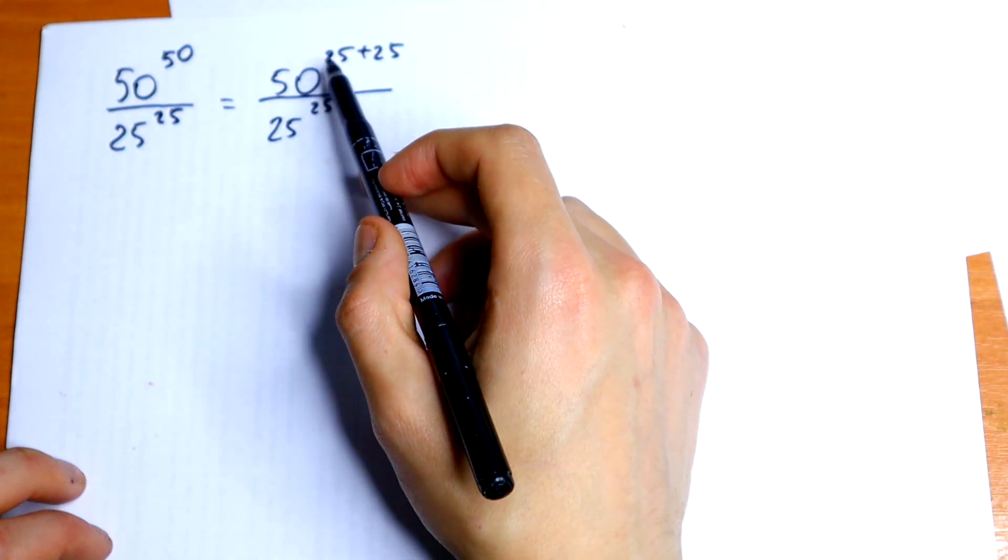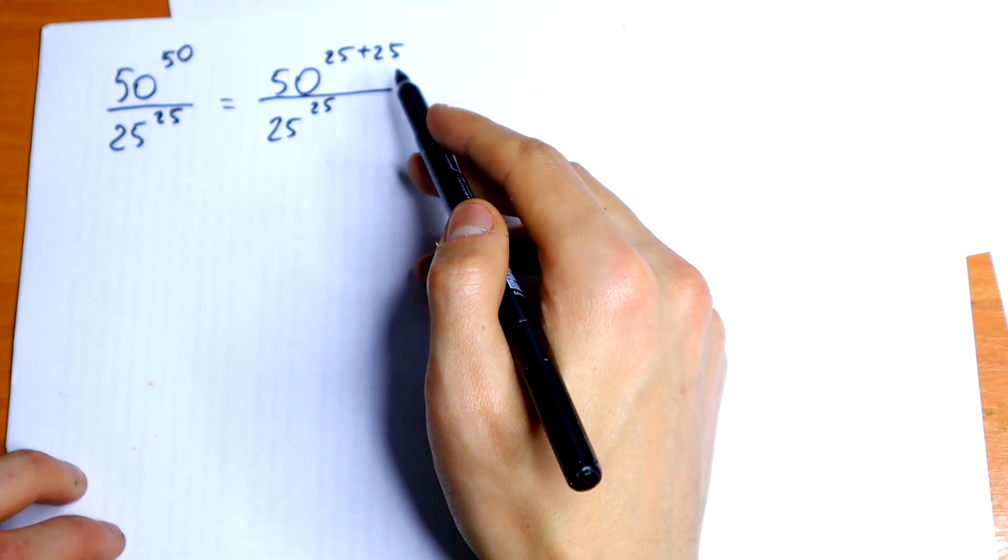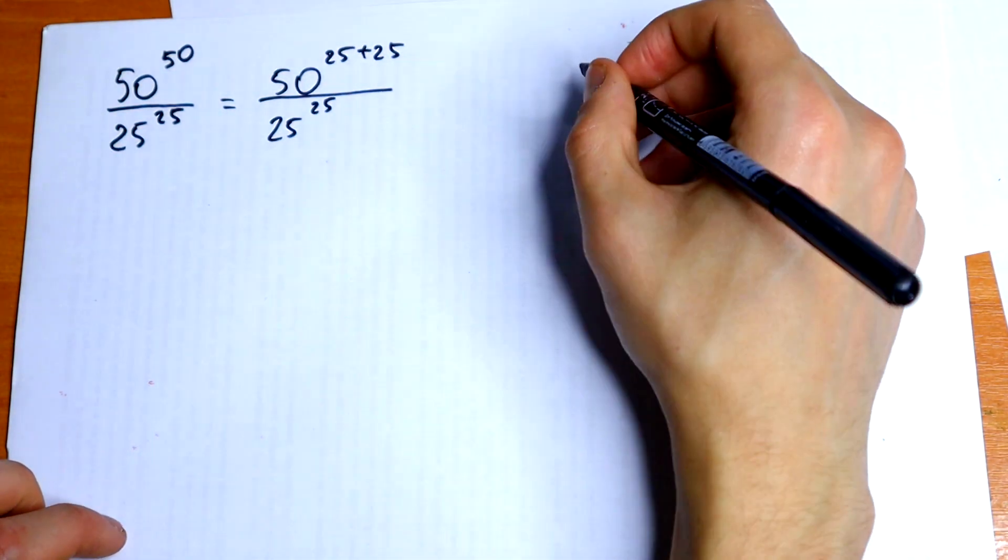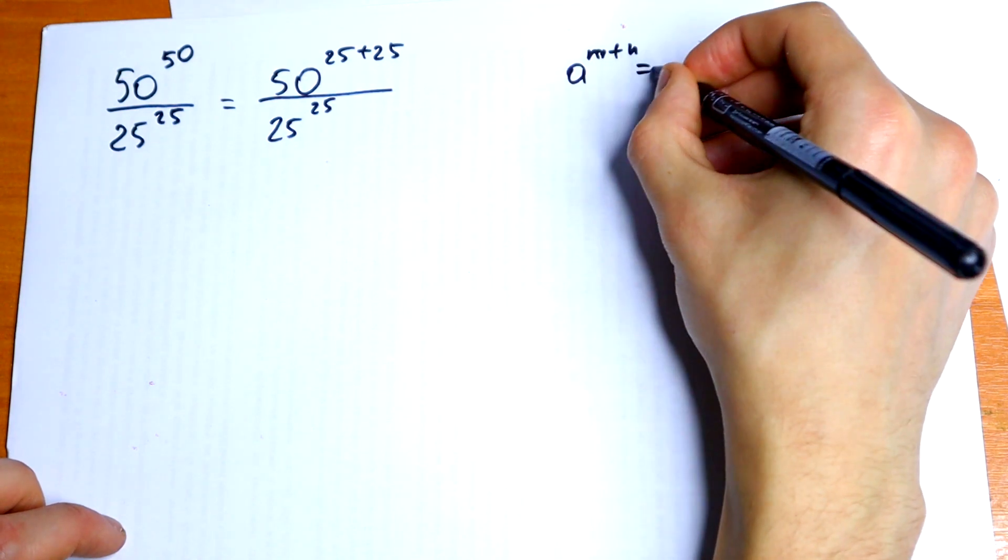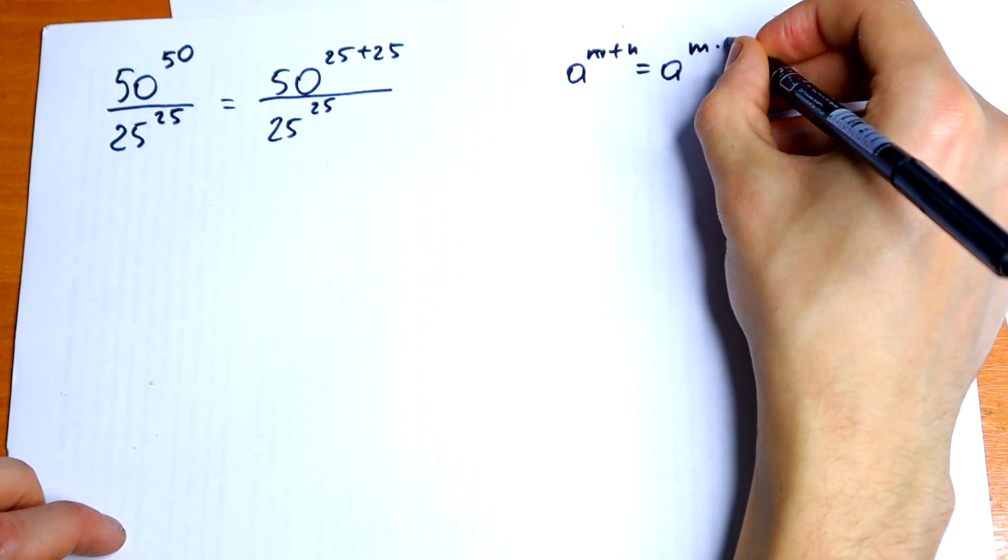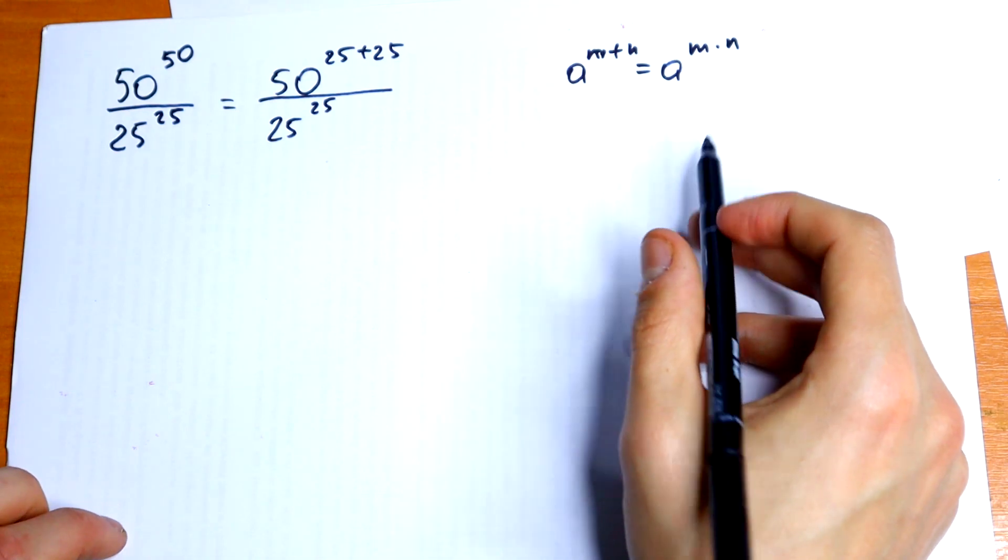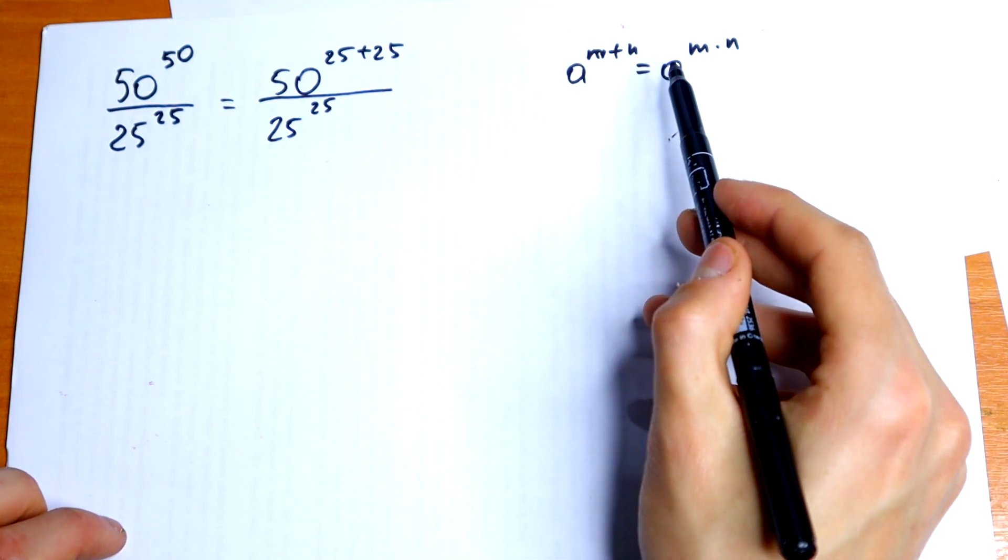The next we gonna do, we need to break these exponents. We know the rule that if we have a to the power m plus n, it will be equal to a to the power m times a to the power n. And this works in that way and in that way.